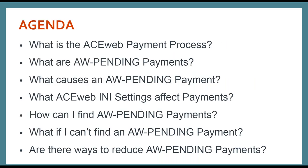We'll take a quick look at our agenda. First, we're going to do a deep dive on the actual ACEweb credit card payment process, going step by step through each of the different phases. Then we'll talk about how AWPending Payments are created and why. We're going to look at some of the causes for those AWPending Payments to stick around, then look at the ACEweb INI setting void pending payments which controls how ACEweb does some cleanup. After that, we'll look at how you can find AWPending Payments and what to do if you can't find them, and finally some ways to reduce and possibly eliminate AWPending Payments altogether.